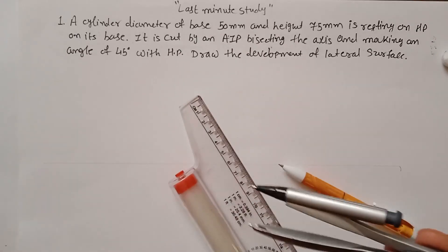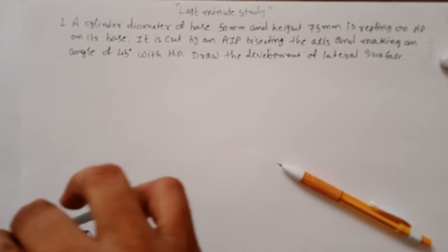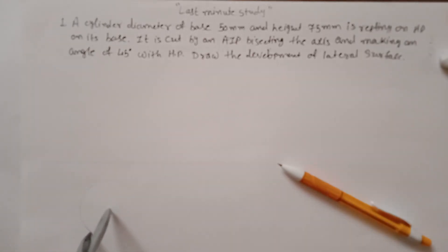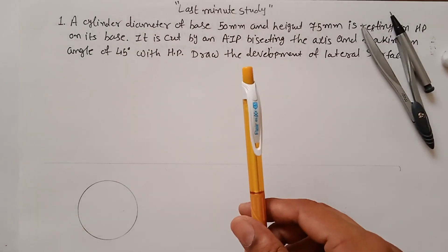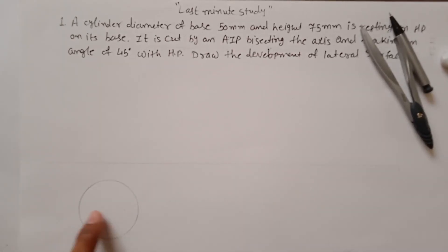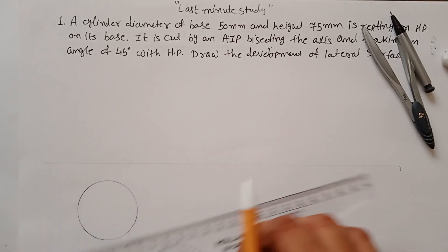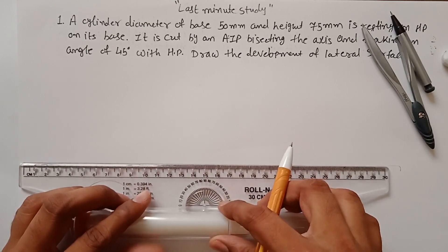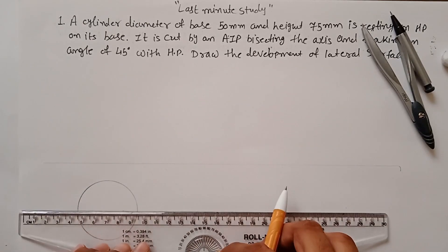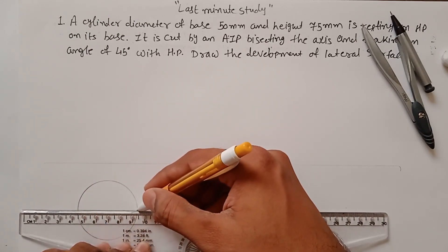The solid has a diameter of 50mm and height of 75mm. The top view of the cylinder is a circle, so first construct a circle with a diameter of 50mm. Now divide this circle into 8 equal parts. You can divide it into any number of parts — 12 or 4 — but 8 equal parts is the optimum number.